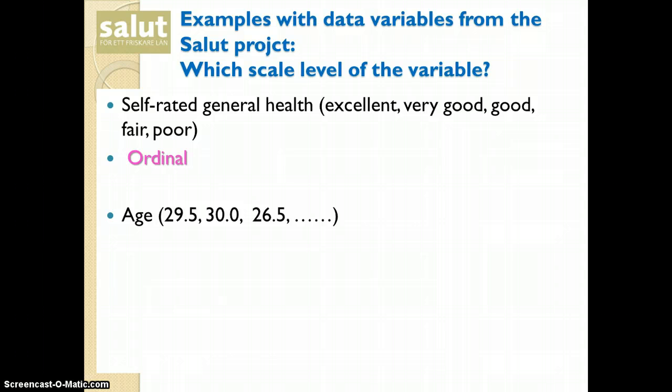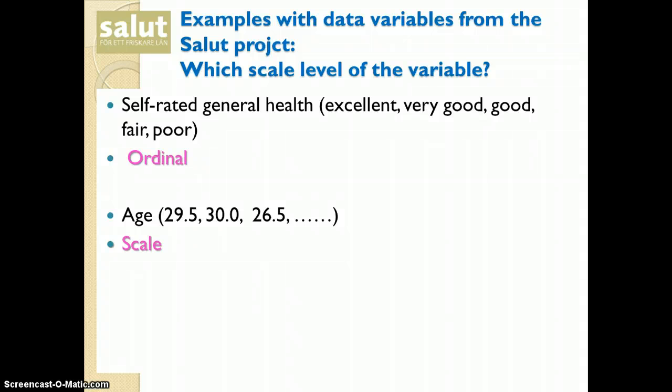Next variable is age. If it is measured like 29.5, 30.0 and so on. The measurement level is scale. And this is because each individual has their own age.